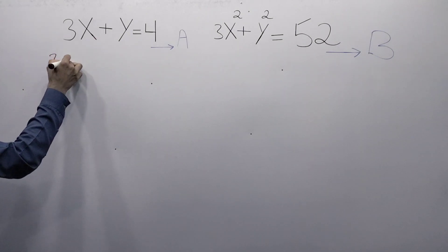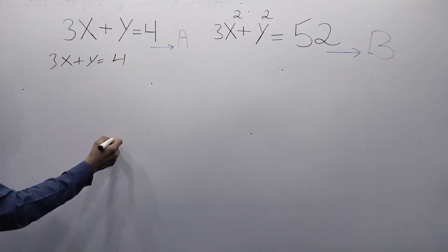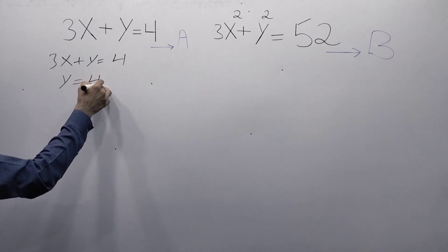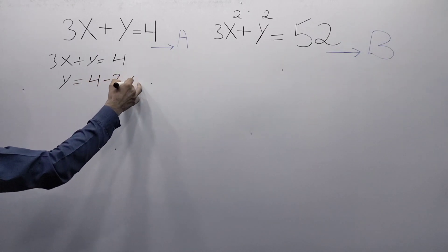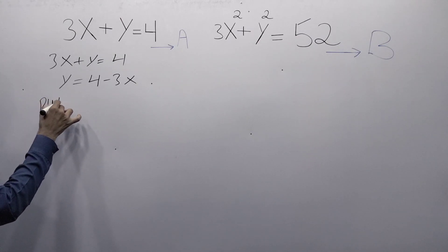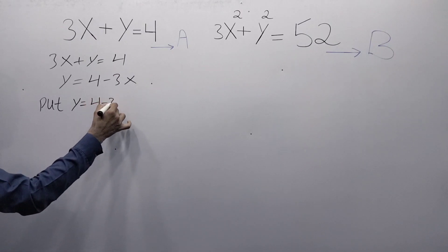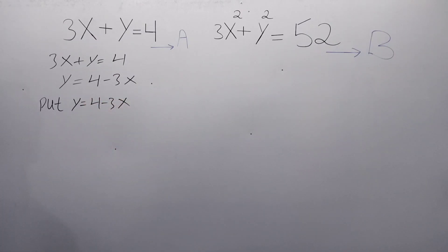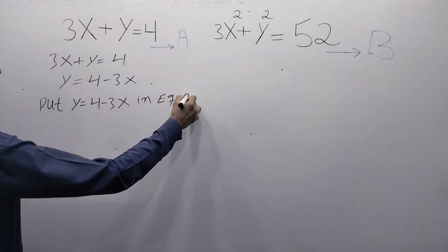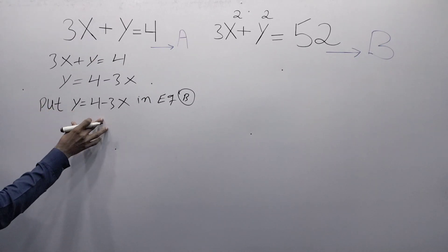From equation A, 3x plus y equals 4, we get y is equal to 4 minus 3x. Now we will put y is equal to 4 minus 3x into equation B, replacing the value of y in equation B.